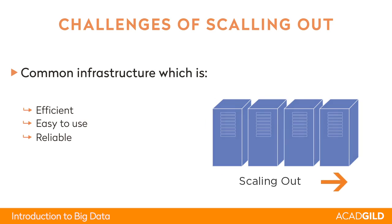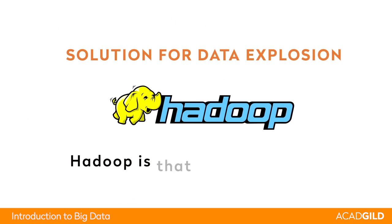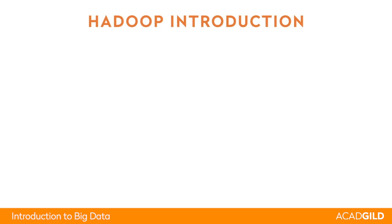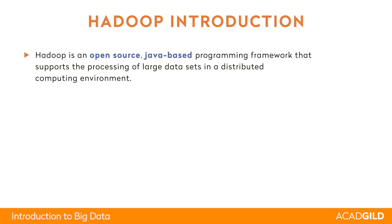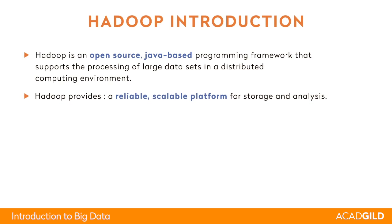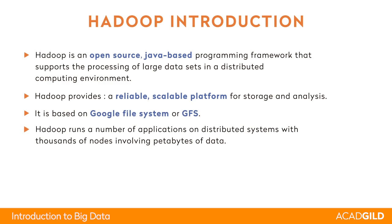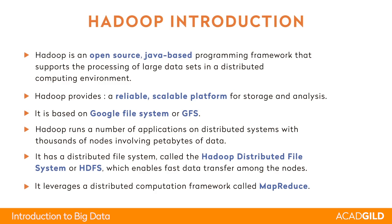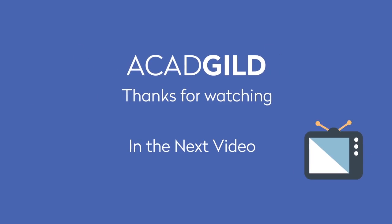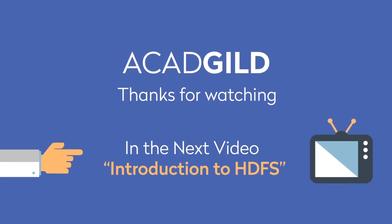This is where Hadoop comes in as the solution. Hadoop is a framework that performs distributed storage as well as parallel processing. It has two frameworks: one for storage and one for analysis. Hadoop is an open-source programming framework based in Java that provides a reliable and scalable platform for both storage and analysis. For storage, it uses a file system called HDFS — the Hadoop Distributed File System. For processing, it has a computation framework called MapReduce. Thank you all for watching, and we will discover more about HDFS in the next videos.